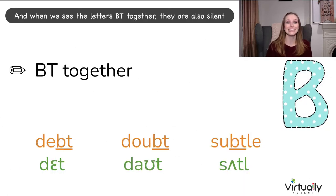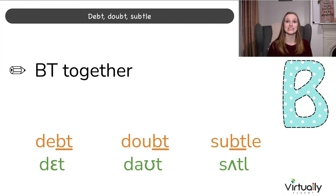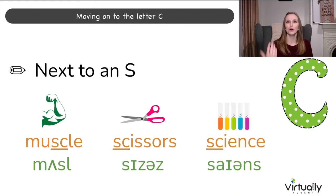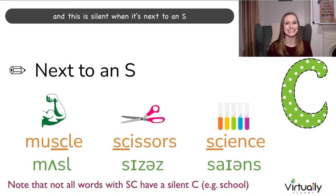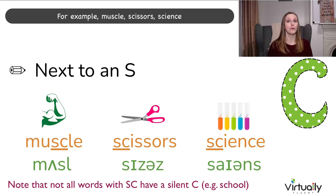When we see the letters BT together, they are also silent — for example: debt, doubt, subtle. Moving on to the letter C. This is silent when it's next to an S. For example: muscle, scissors, science. We don't want to hear that C sound — we only want the S instead.